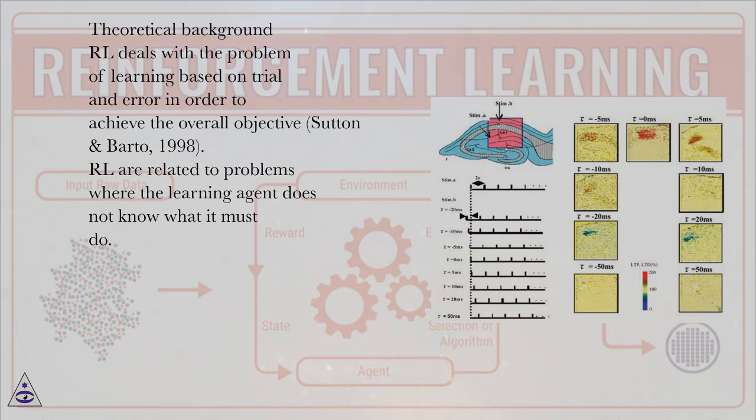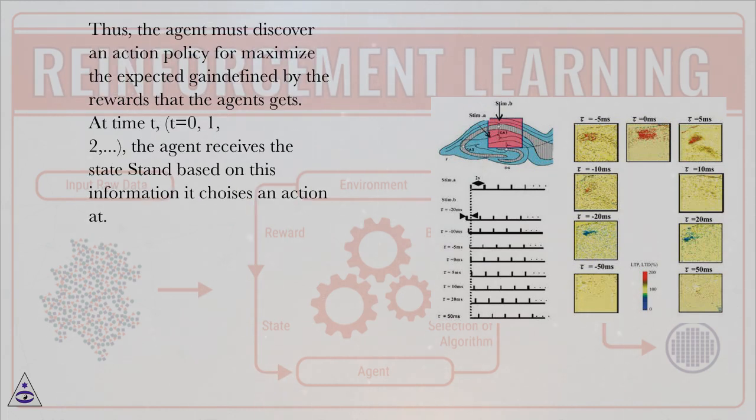RL is related to problems where the learning agent does not know what it must do. Thus, the agent must discover an action policy to maximize the expected gain defined by the rewards that the agent gets.